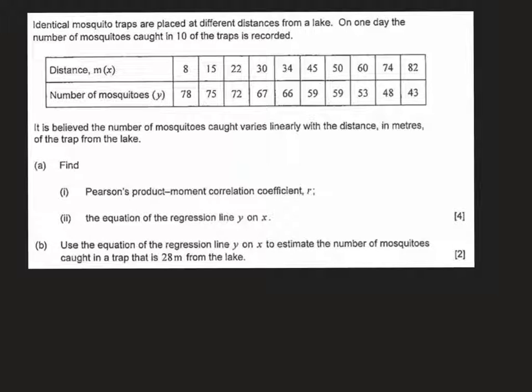Question 3 is all about Pearson's product moment correlation coefficient, which sounds a bit complicated but essentially can be done pretty straightforwardly using the calculator. So we're looking at some mosquito traps that are placed in a variety of different locations at different distances from the lake.